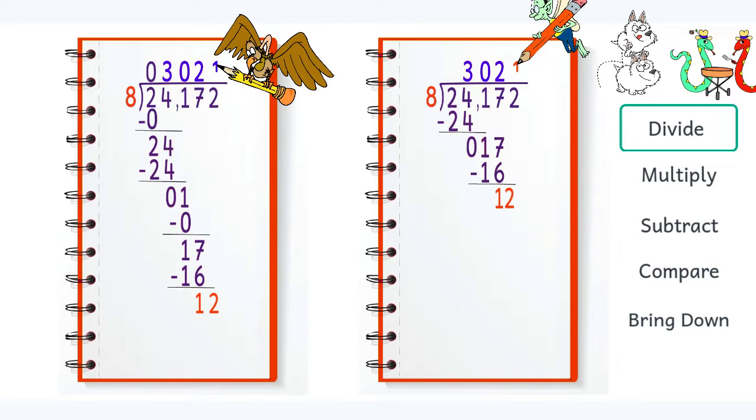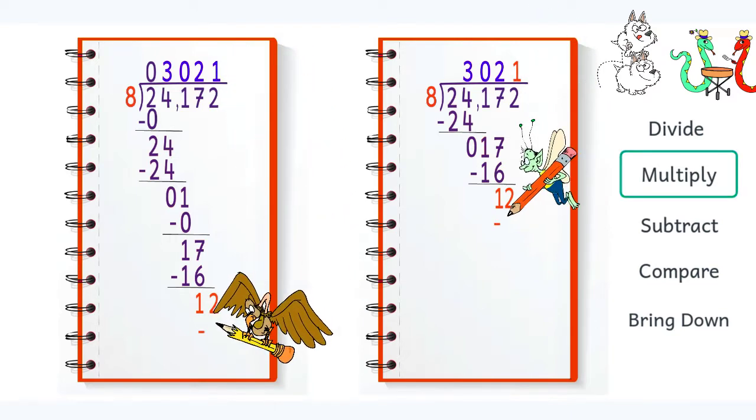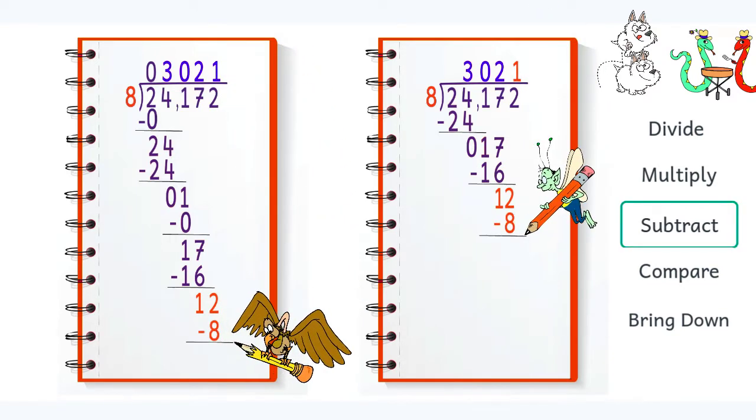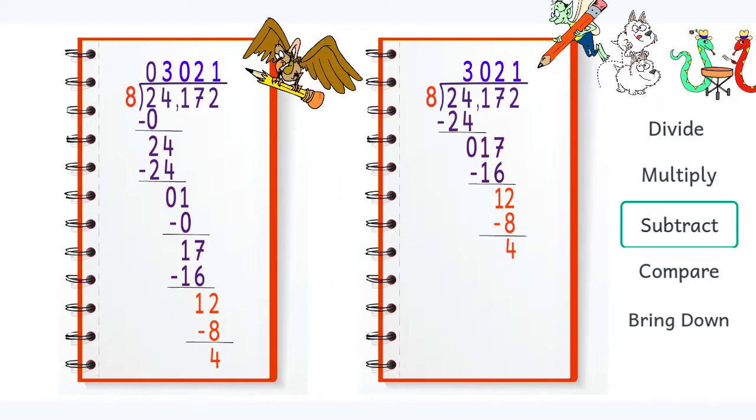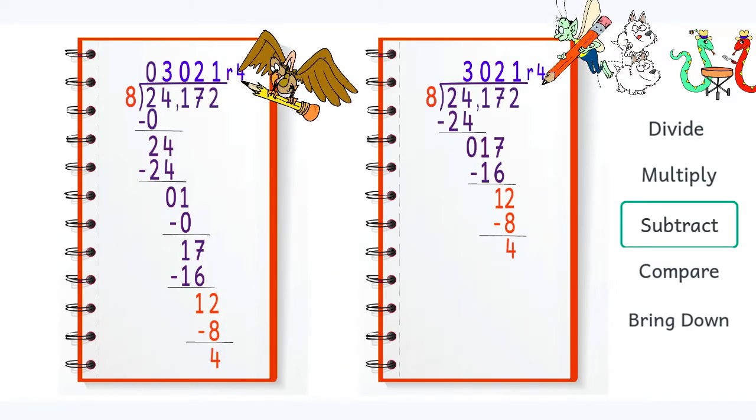Eight goes into twelve one time. One times eight is eight. Twelve minus eight is four. So the number would be three thousand twenty-one with four left over.